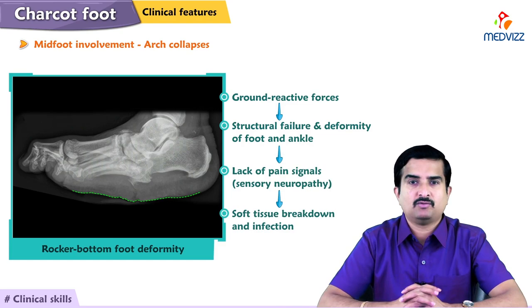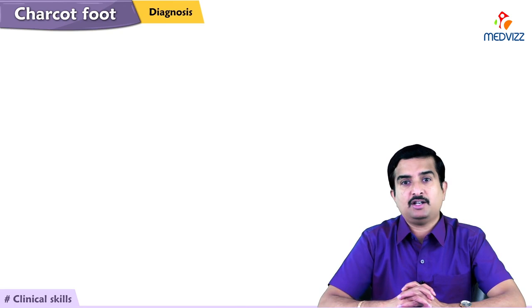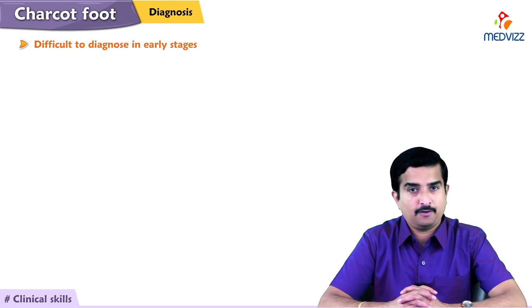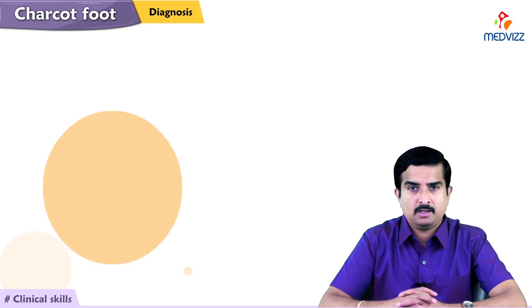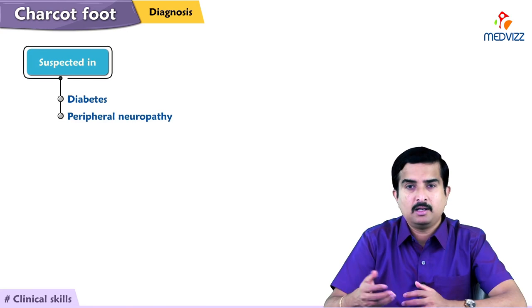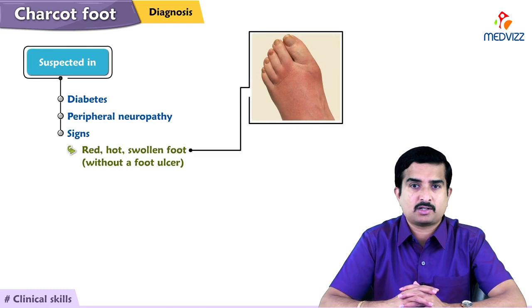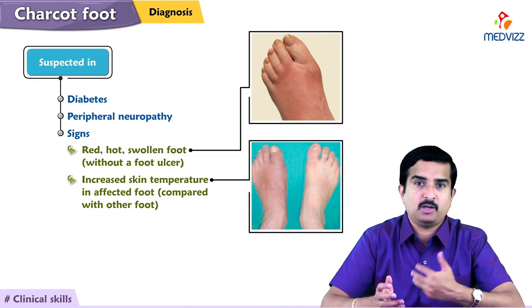In the early stages, Charcot foot is difficult to diagnose. X-rays are often normal, and if X-rays and laboratory tests are normal, Charcot foot is diagnosed by knowing the signs of the condition. It is suspected in persons who have diabetes and peripheral neuropathy with a red, hot, swollen foot without a foot ulcer and increased skin temperature in the affected foot compared with the contralateral foot.